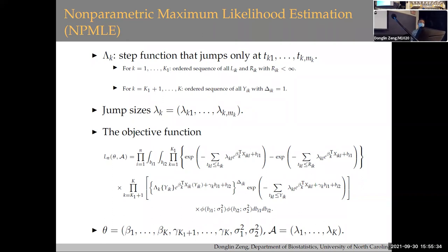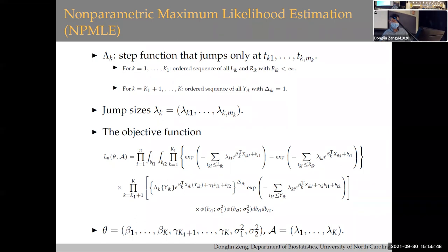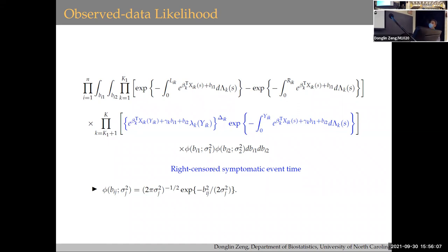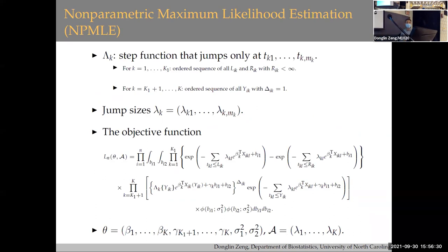We take the non-parametric maximum likelihood estimation approach. The parameters include beta, sigma squared, and also the baseline hazard functions λ_k, which are fully non-parametric. Similar to the standard Cox model for right-censored data, we assume the cumulative baseline Λ_k is a step function that only jumps at observed time points. This is data-driven — there's no point assuming jumps at time points where no events are observed. We are not using smoothing, unlike spline-based methods. The jump sizes y_{ik} at observed time points replace the small λ_k density.